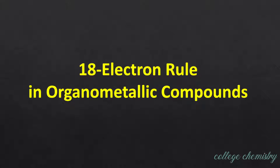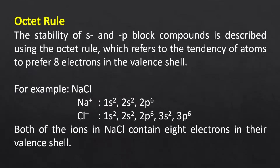Before moving to the 18 electron rule, let us go back to the octet rule. The stability of S and P block compounds is determined using the octet rule, which refers to the tendency of atoms to prefer 8 electrons in the valence shell. That is, the sum of its Ns electrons and Np electrons must be equal to 8.